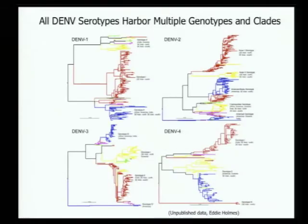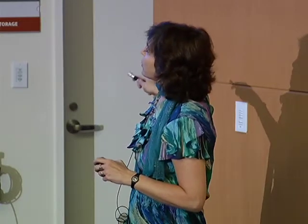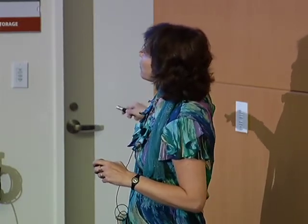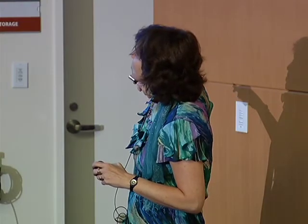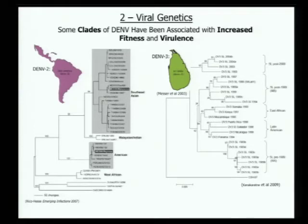The immune response is better at recognizing the previous virus than the current one, leading to an enhanced immune response to the wrong virus — causing immunopathology. This is called original antigenic sin. Looking at phylogenetic trees of the four different serotypes, you can see a gradual replacement of one clade by another. Clades that are big enough are called genotypes, and each genotype is composed of clades. The question is: why is there this constant turnover — is it a viral question or does it have to do with population immunity, and is there a link with severity?